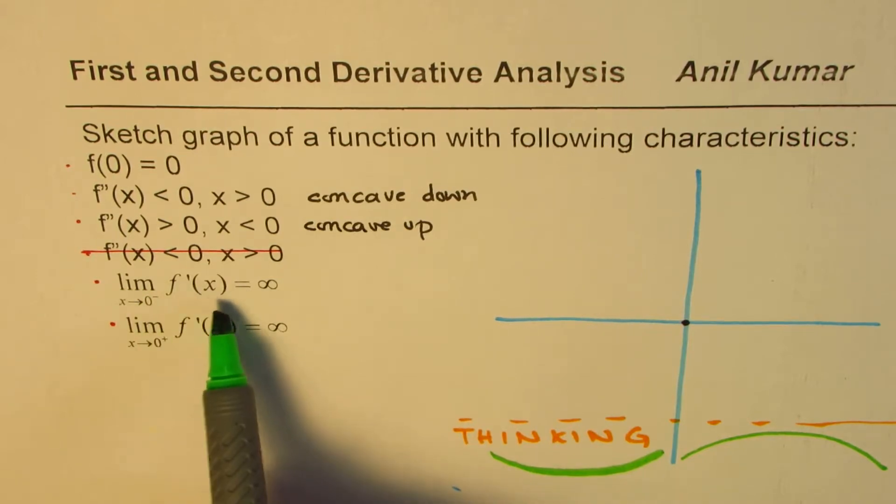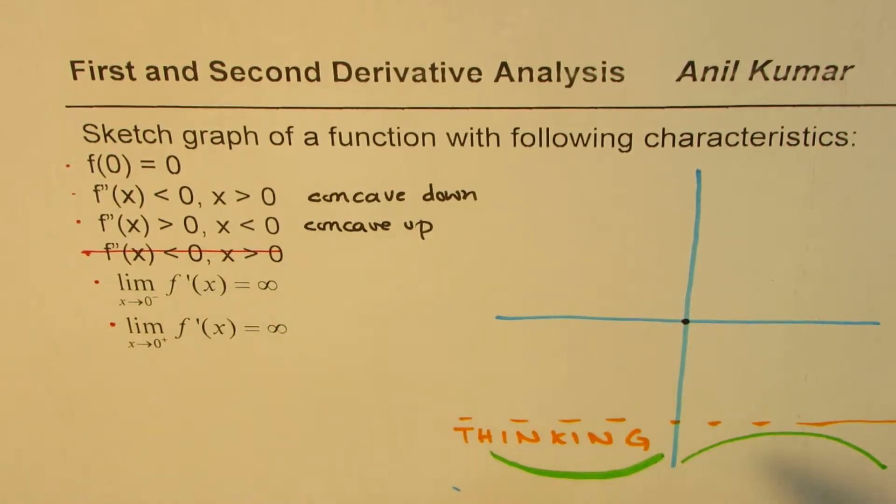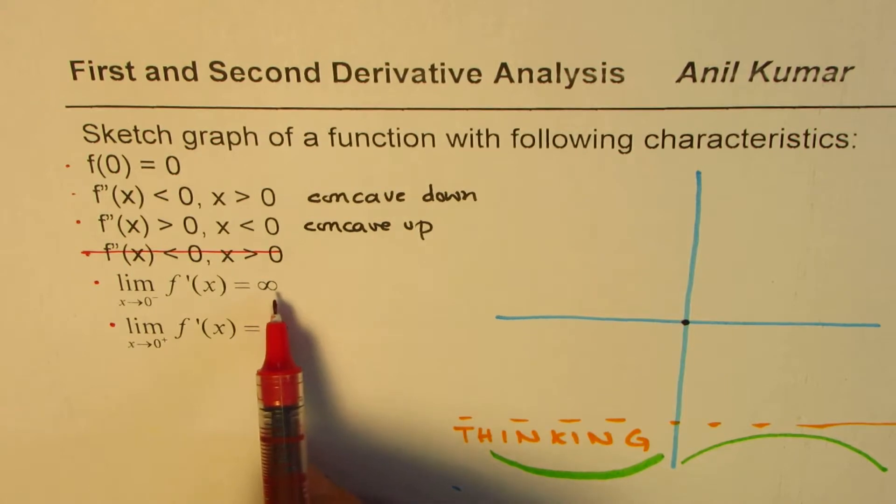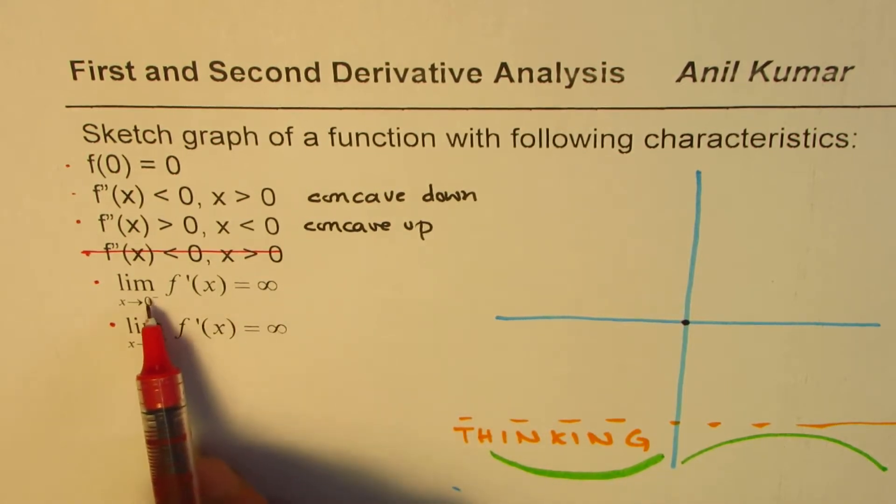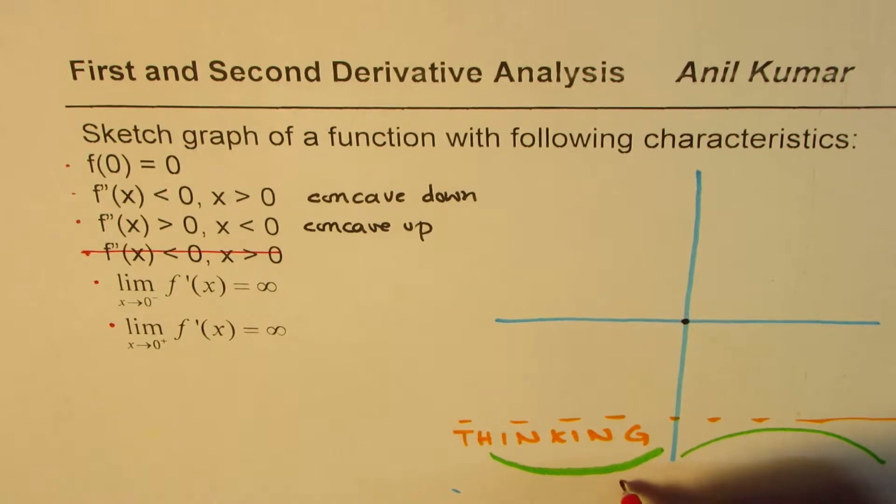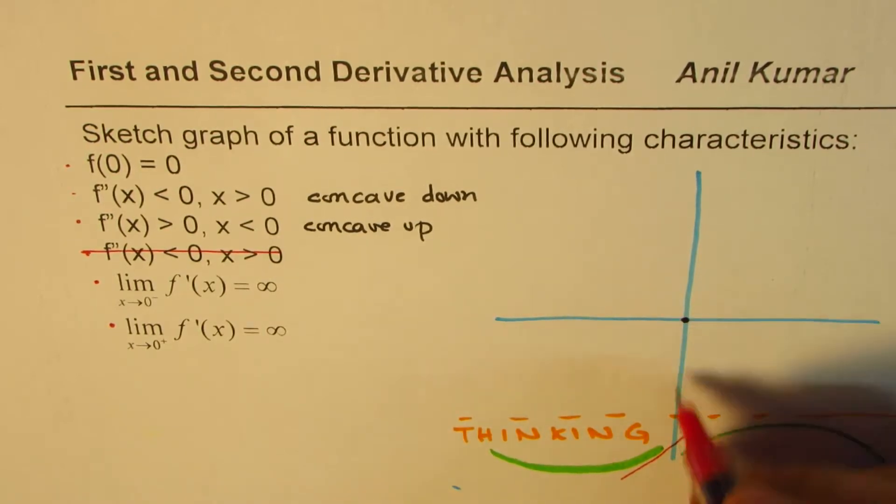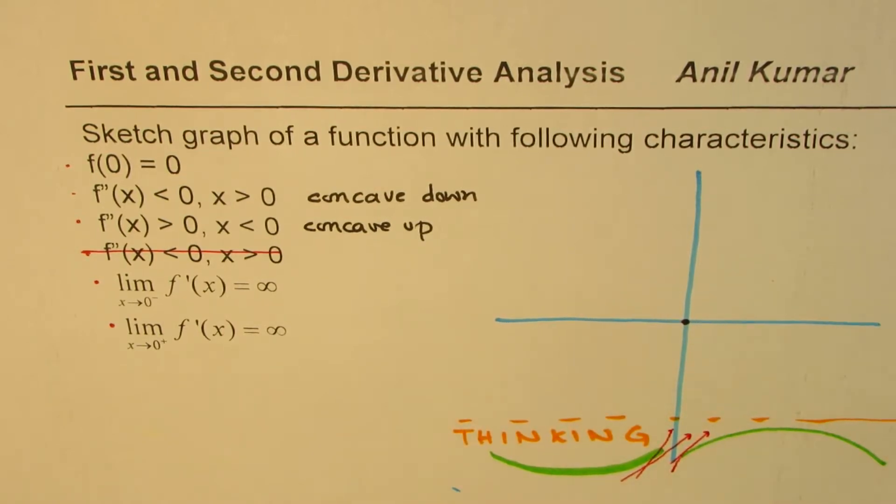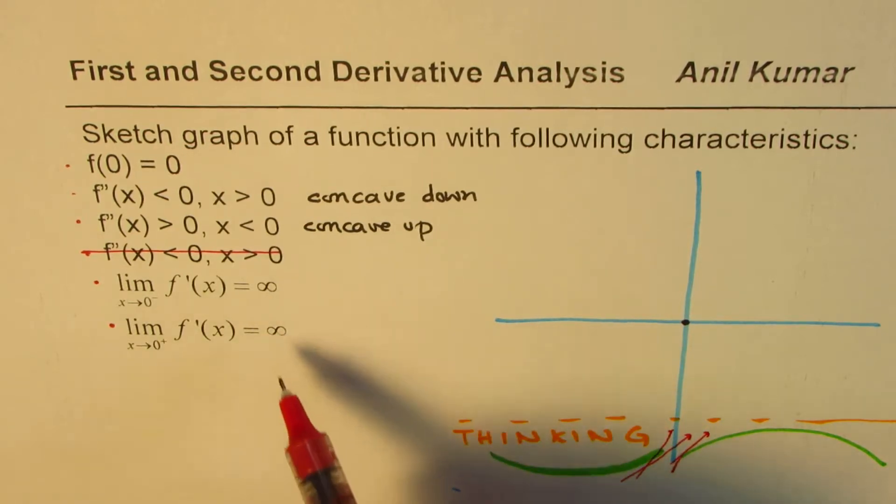Then the limit for the derivative, that means if I draw a tangent to this curve, in that case it is approaching positive infinity from both sides, 0 from left or from right. So that means if I draw a tangent and as I approach 0 it kind of approaches positive infinity. So this you can see for both this graph it is actually positive and as you approach towards 0 it is kind of positive infinity. So these conditions are what these conditions are.